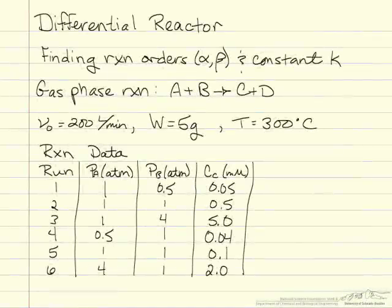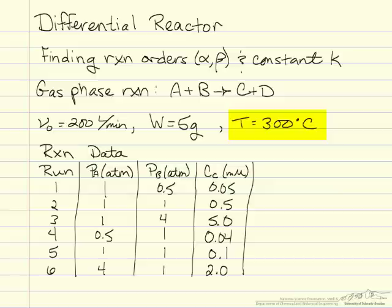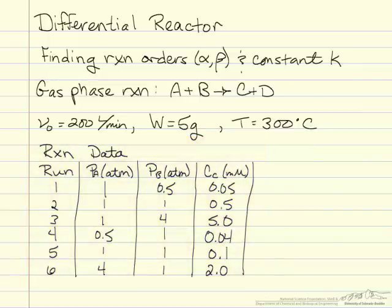In this example we'll be looking at a differential reactor where we're trying to find the reaction orders alpha and beta and the reaction constant K, for the gas phase reaction A plus B goes to C plus D. The initial volumetric flow rate is 200 liters per minute, the weight of catalyst is 5 grams, and the reaction temperature is 300 degrees Celsius. We're also given a data chart with several runs where either the partial pressure of A or B is held constant while the other varies, and the concentration of product C is recorded for each run.